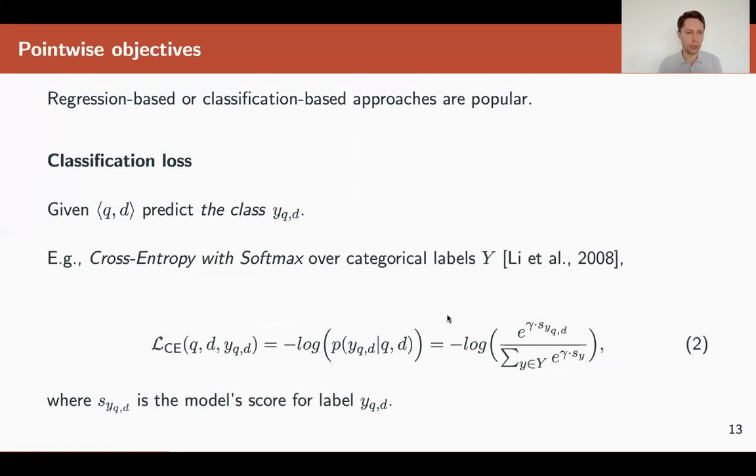Another approach could be classification loss, where we treat our labels as classes. If we have labels from zero to four, we have five classes. Then we use certain classification losses, for example, cross-entropy loss like this, where we use softmax over all the classes.